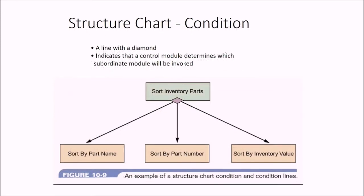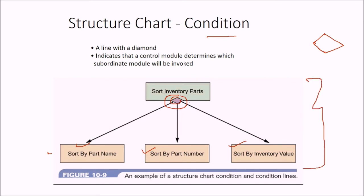The condition in a structure chart is represented by a diamond. A line with a diamond indicates a control module which determines which subordinate module will be invoked, because this is a decision. For example, a condition determines whether to sort inventory parts by part name, part number, or inventory value. These are conditional lines in the structure chart.